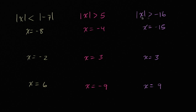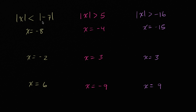We have three inequalities here that involve absolute values. Below them, we have potential values for x. What I want to do in this video is see which of these potential values for x actually make the inequality true. So let's start with this first one in green here on the left. It says the absolute value of x is less than the absolute value of negative 7. Let's think about which of these x values would make this true.